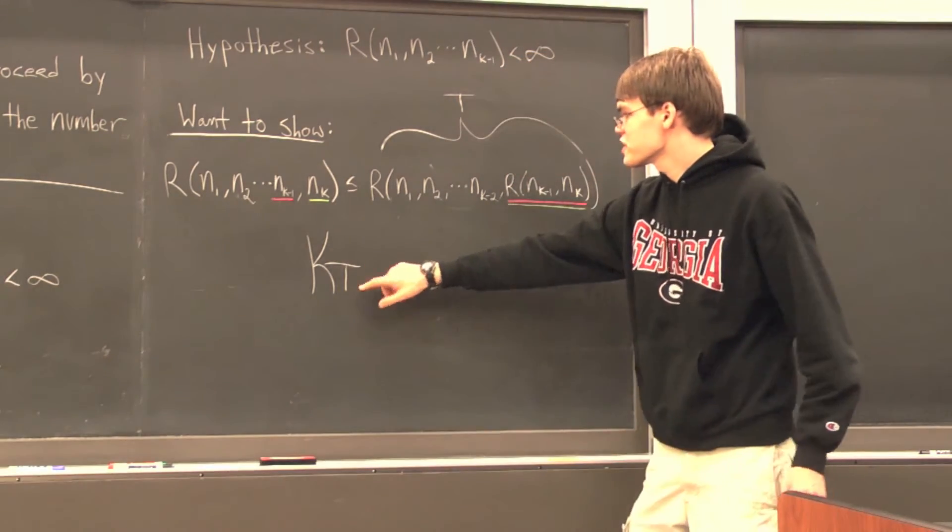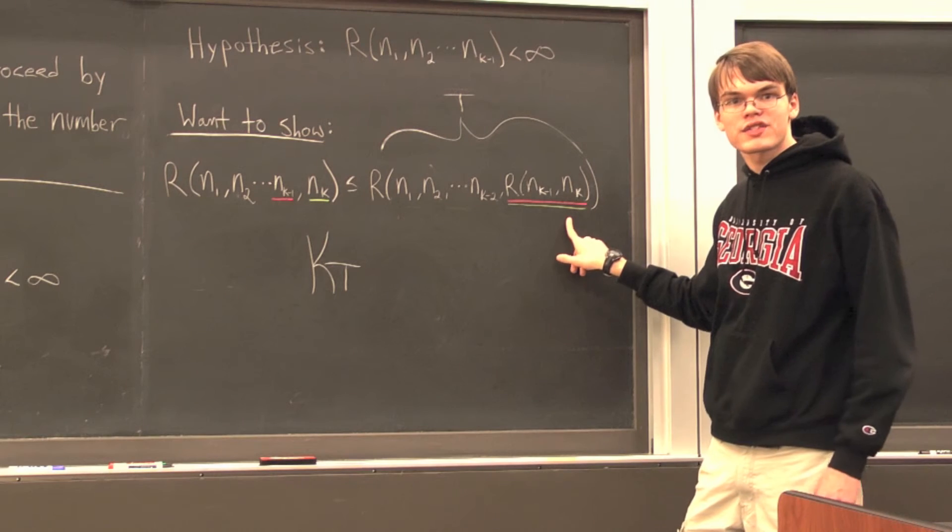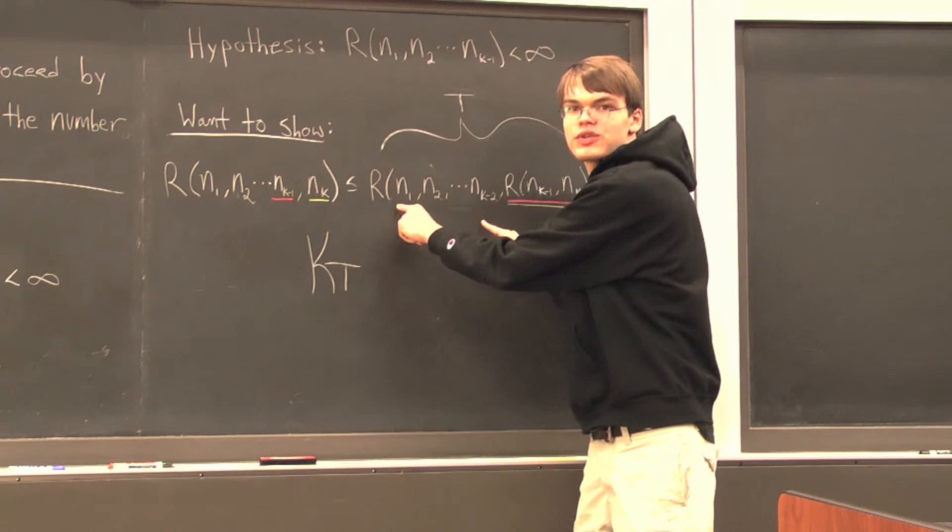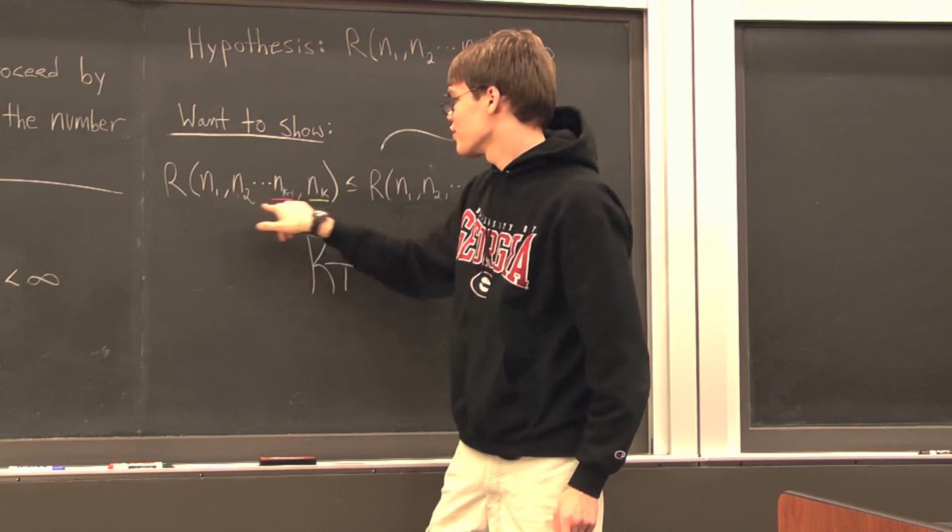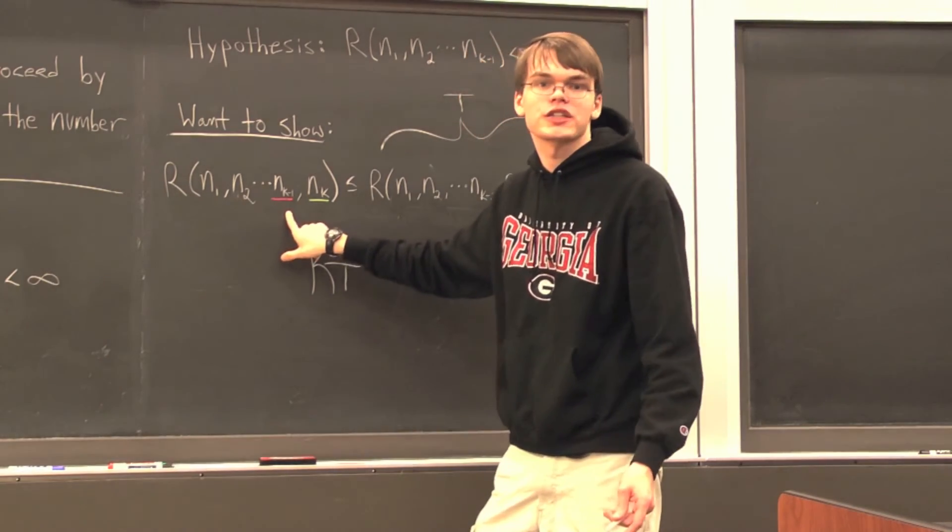Now, because there's t vertices, that means that one of these k minus 1 cases holds. Now, if any of the first k minus 2 cases hold, then that satisfies one of the first k minus 2 cases over on this side, and we're finished.